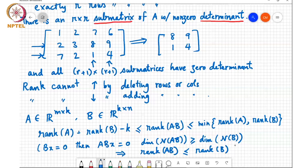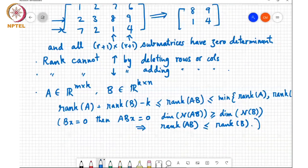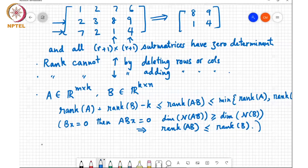Similarly, you can make an argument in terms of if y transpose A equals 0, then y transpose AB equals 0 and so it goes. Another well-known inequality is the Sylvester inequality.